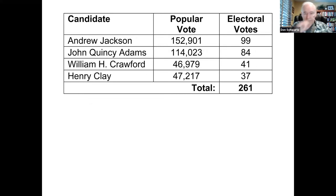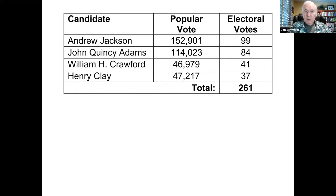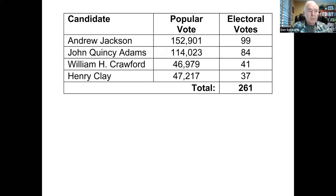In order to be elected, you needed a majority, and the simplest majority was 131. Although Jackson got the most popular votes and the most electoral votes, he was still 32 electoral votes short of the required majority. So, according to the Constitution, the election was thrown into the House of Representatives.